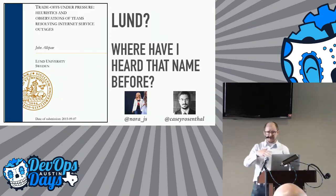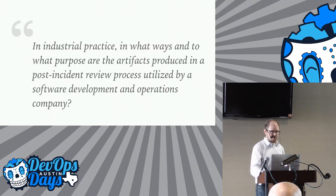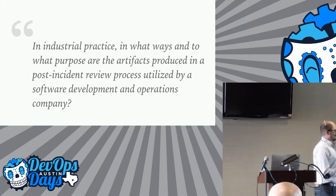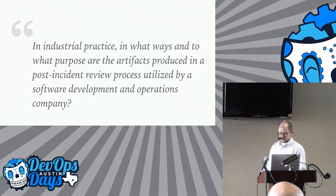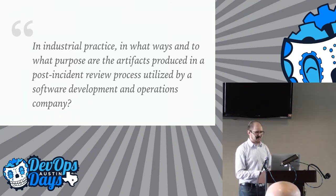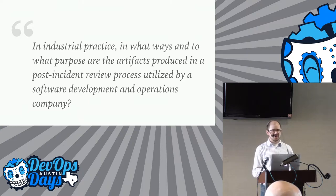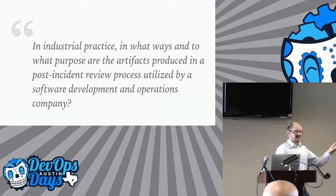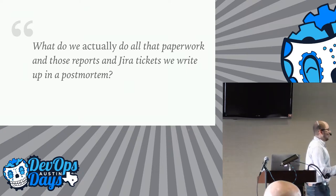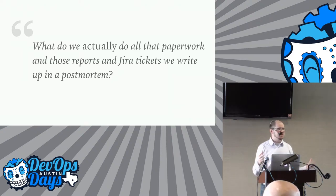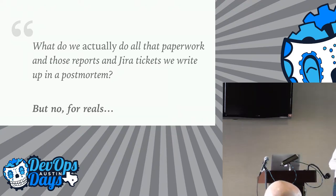We're going to spend about half our time talking about the research, because there's some really interesting findings there, and then talk about what you can do to improve your world as it relates to retrospectives and artifacts. The research question, direct from the thesis: 'In industrial practice, in what ways and to what purpose are the artifacts produced in a post-incident review process utilized by a software development and operations company?' What are we really asking? What do we actually do with all that paperwork, all those reports, all those JIRA tickets we write up in a post-mortem?